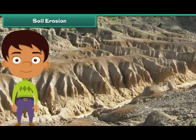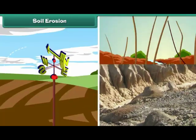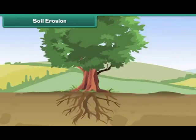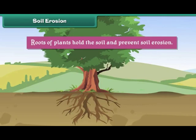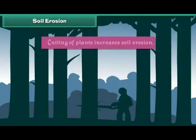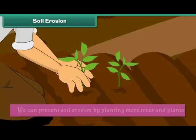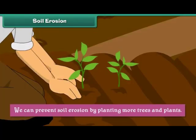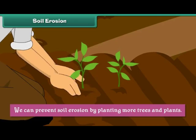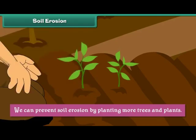Soil erosion is the removal and transfer of soil by wind and water. Roots of plants hold the soil and prevent soil erosion, while cutting of plants increases it. We can prevent soil erosion by planting more trees and plants.